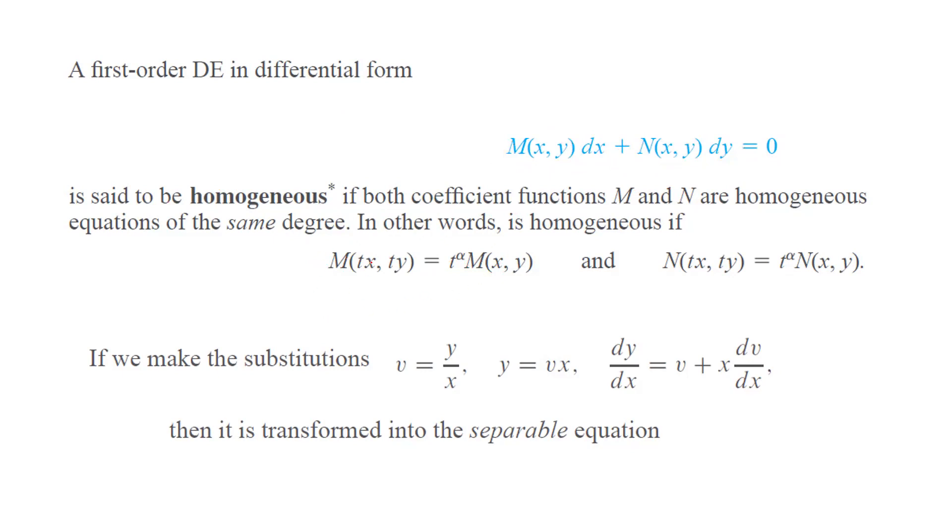To verify that they are homogeneous functions, we substitute tx for x and ty for y and check if it equals t to some exponent times M(x,y), and the same for N. Then you can apply substitution like v = y/x or y = vx. Take the differential of both sides, and it transforms the original differential equation into a separable differential equation.